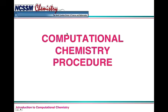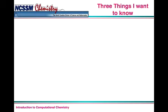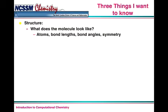Okay, let's talk a little bit about computational chemistry procedure. And roughly there are three things that I want to know. I want to know, and I refer to this as SPA. I want to know the structure. What does the molecule look like? And what are the atoms in there? What are the bond lengths? What are the bond angles? What's the bond symmetry?